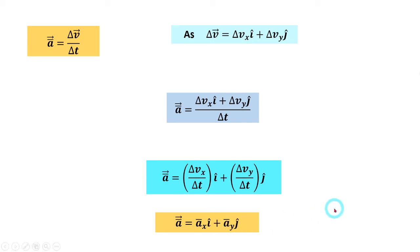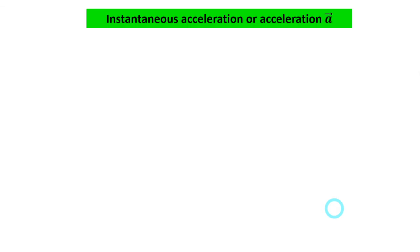In two dimensions, we use the same equations of motion as in straight-line motion, but applied separately along the x-axis and y-axis. Next, instantaneous acceleration — or simply acceleration — is defined.